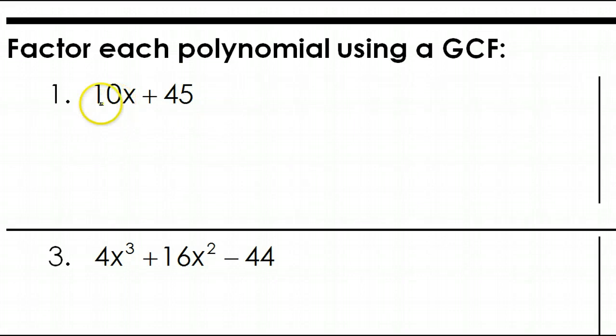So looking at number one, what is the greatest common factor? Well, it looks like the biggest number that divides evenly into 10 and 45 is 5. There are no variables in common, so 5 all by itself is the greatest common factor. Now, one way to look at it is we're dividing once you factor out this GCF. So 10 divided by 5 is 2, and 45 divided by 5 is 9. Now, if you think back at the distributive property, it should take you back to where you started from, and of course it does. So that's the answer number one.